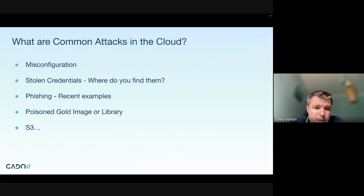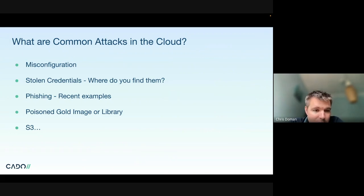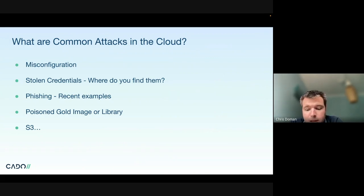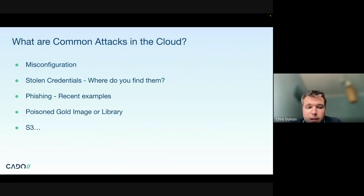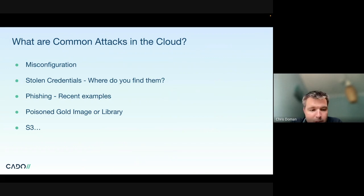Some more common attacks in the cloud include misconfigurations and stolen credentials — for example, if you've posted your AWS Access Keys and Secret Keys to GitHub, AWS will probably let you know. Phishing is also a major attack vector; some big gaming companies recently compromised had phishing as the root cause, with attackers pretending to be AWS and asking for passwords. You also occasionally see poisoned AMI images or backdoored Amazon Machine Images, and of course open S3 buckets.